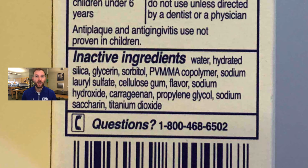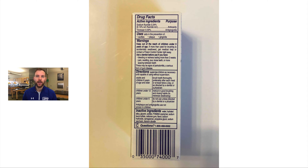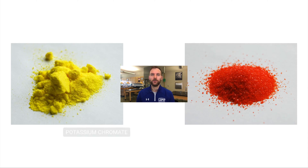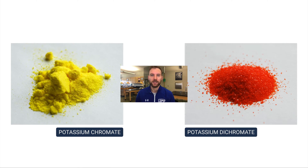After this unit, if you're looking at an ingredients label you might recognize some of the things in products you're buying. This is really important because if you look at just these two substances, at first glance they look very different — the one on the left is yellow and clumpier, the one on the right looks like red-orange sugar. But these are actually very similar: this is potassium chromate on the left and potassium dichromate on the right.